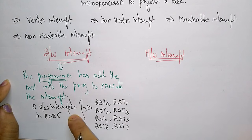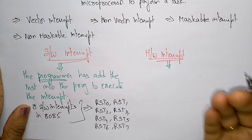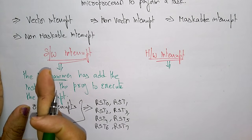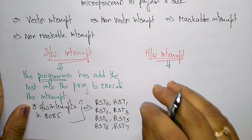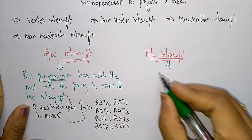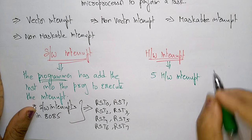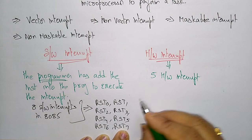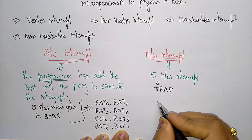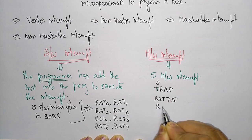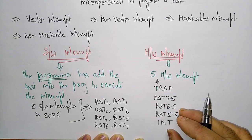Now let us see what hardware interrupts are. A hardware interrupt is caused by hardware — some external hardware devices. There are a total of five hardware interrupts in the 8085 microprocessor. The pins connected to these hardware interrupts are: TRAP, RST 7.5, RST 6.5, RST 5.5, and INTR.